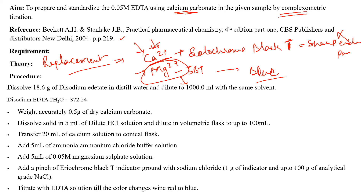The excess magnesium salt added with calcium is also volumetrically evaluated with a blank determination. For the procedure: first, prepare the disodium EDTA solution. Disodium EDTA dihydrate is available in the lab, with molecular weight 372.24. For one liter of solution, the calculation gives 18.6 grams. Using the formula: Normality = Weight / Equivalent weight × 1000 / Volume, you get 18.6 grams of disodium EDTA, which is taken in the burette.